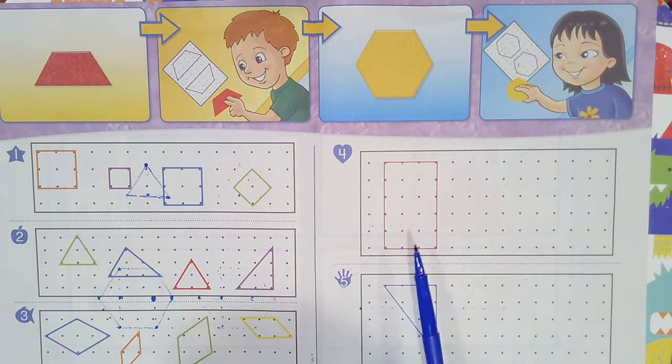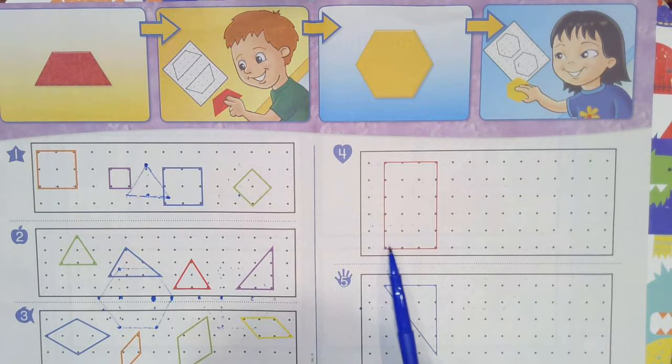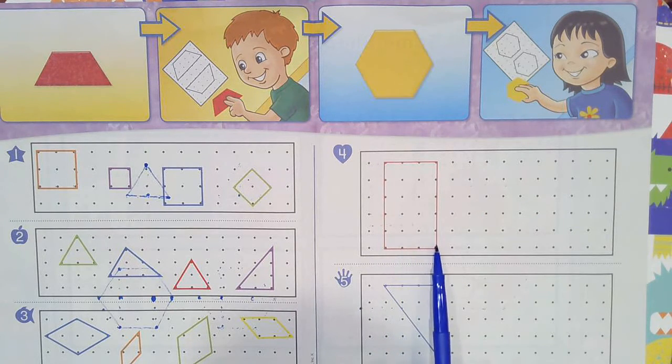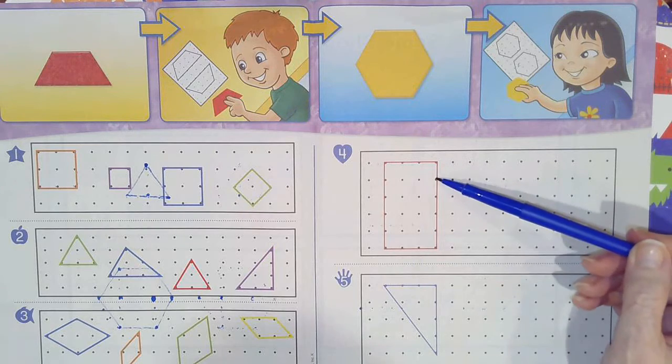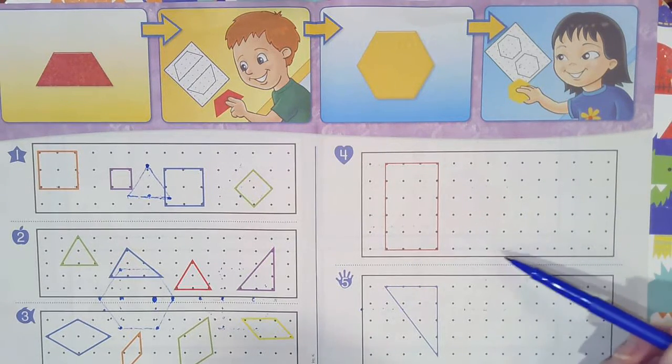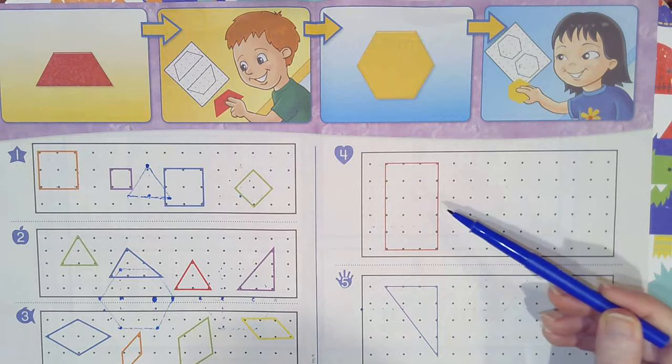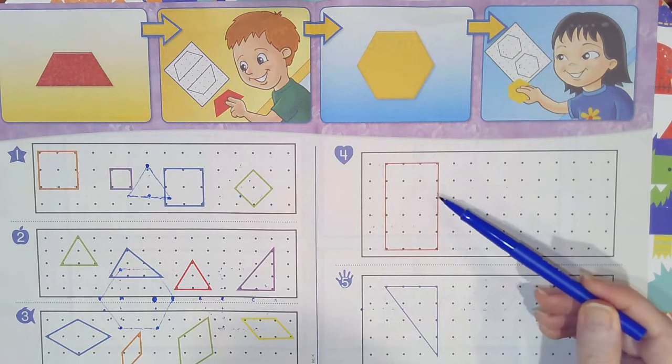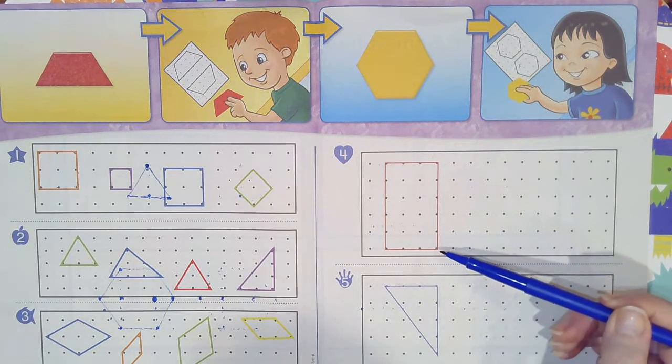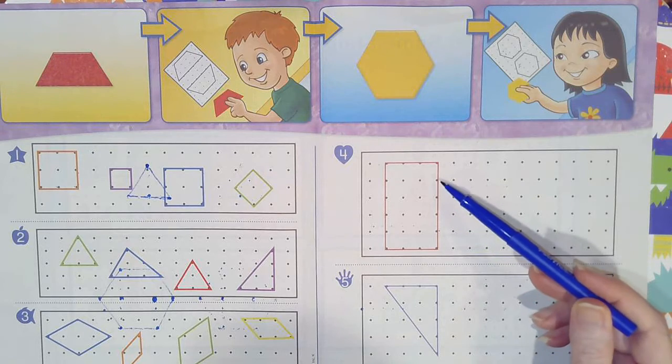Okay, so remember, you're going to count the number of dots on each side. So over here, you're going to draw the same shape, but make sure you're counting the dots. And that's going to make sure that it's the same length.